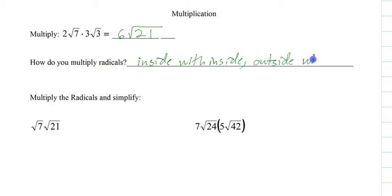And of course we're talking about the radical itself, so outside the radical with outside the radical, inside the radical with inside the radical. The reason is the commutative property, so this is 2 times radical 7 times 3 times radical 3. We can put everything together - the 2 times the 3, the radical 7 times the radical 3.